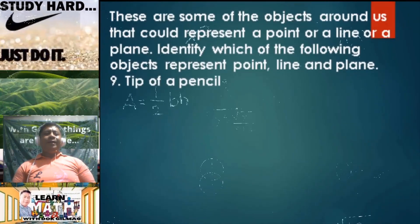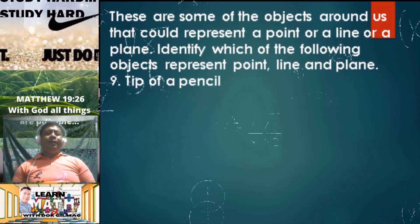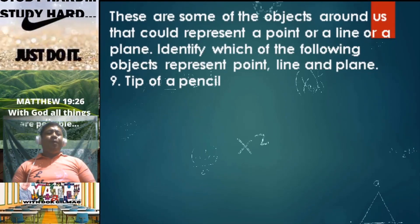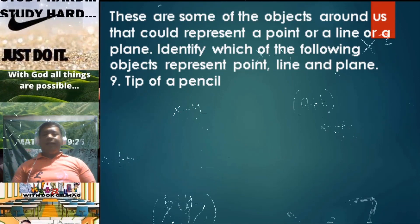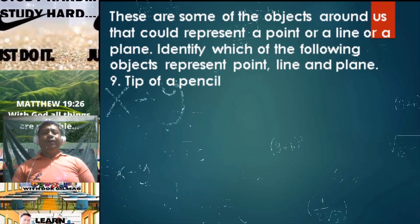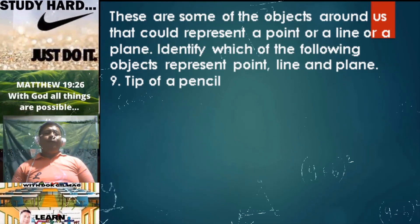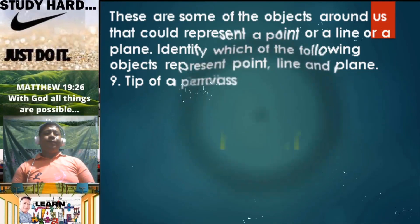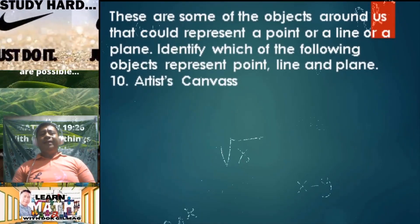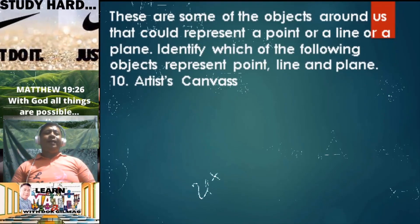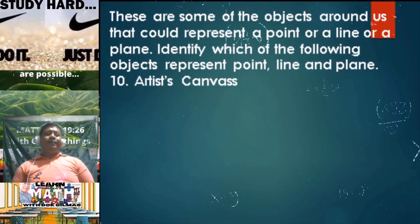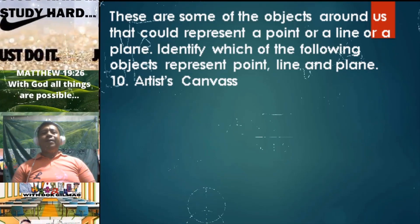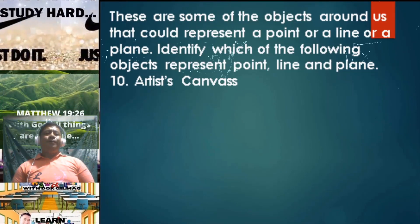Number nine: tip of a pencil — tip of a pencil is a representation of a point. Number ten: artist canvas — this is simply a representation of a plane.